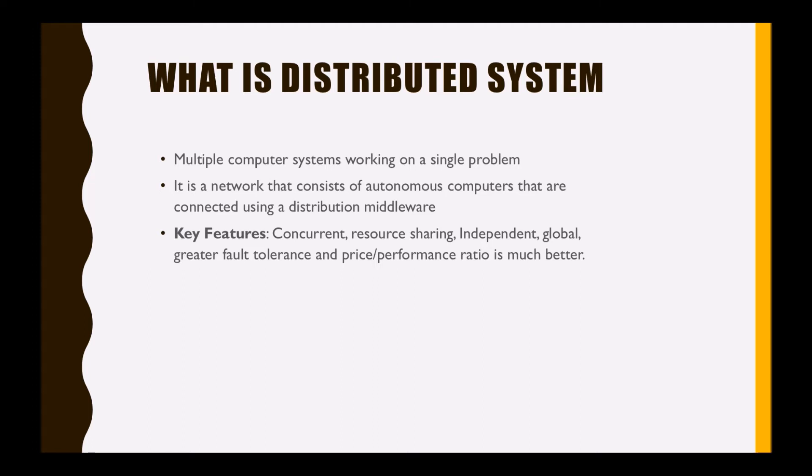Components in the distributed system are concurrent — they work all together. It also allows resource sharing, including software, by systems connected to the network at the same time. The components could be multiple but will generally be autonomous in nature. The systems can be spread across different geographies; for example, few nodes can be in India, few in Japan, and few in the USA.